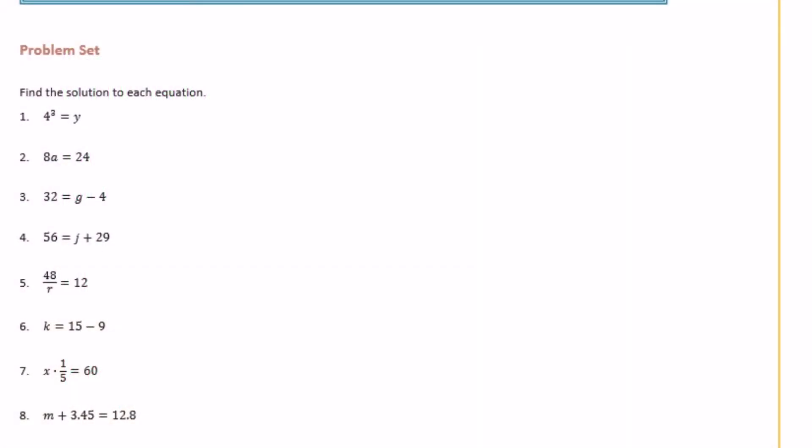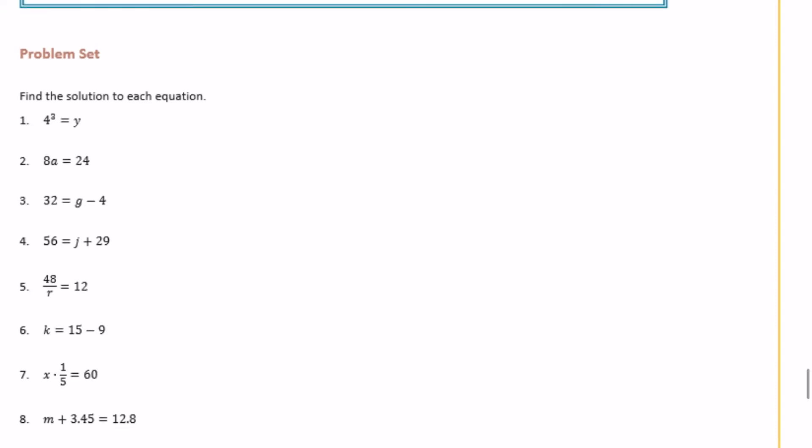Sixth grade module 4 lesson 25 problem set. Find the solution to each equation. Number one: 4 to the third power is equal to y. We want to know what we can put in place of y to make this statement true. So 4 to the third power is the same as saying 4 multiplied by itself three different times.